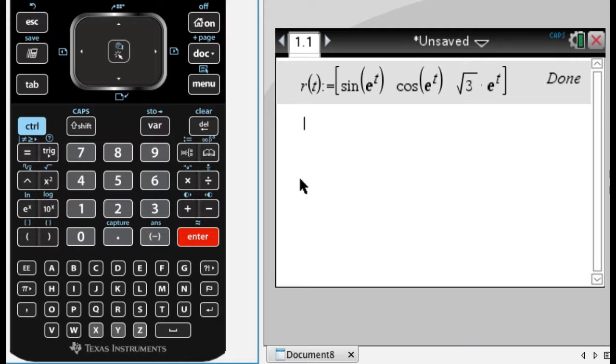Okay, so I have that, make sure you use either the exp of t or you use this key. If you just use e, the letter e, it doesn't know what you're talking about, it thinks you're literally just using the letter e.